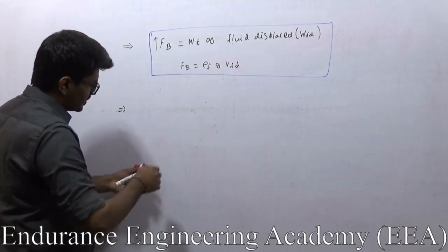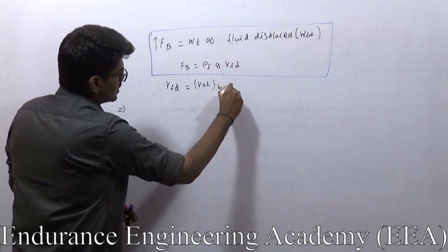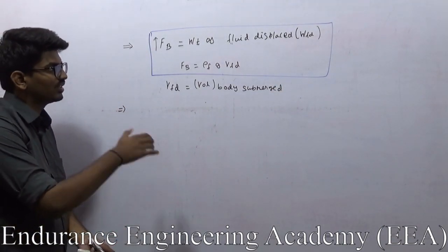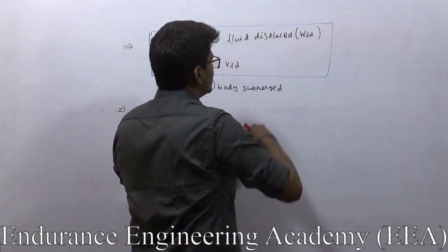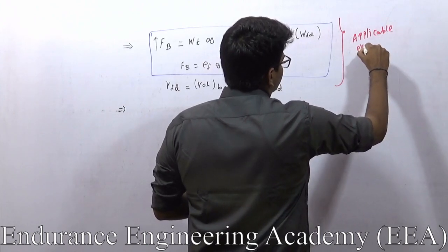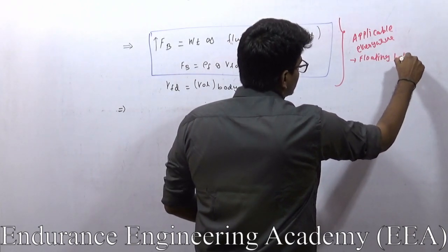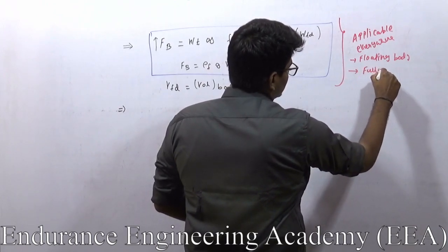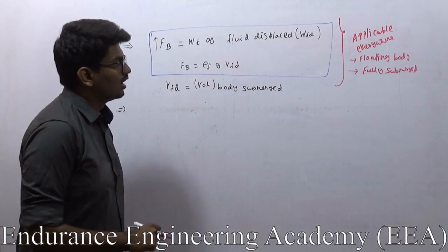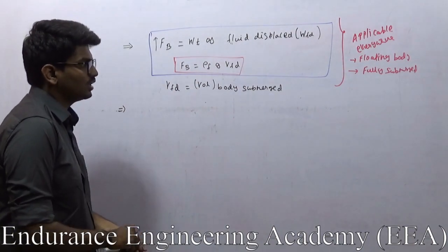The same Archimedes' principle also says that the volume of the fluid displaced is equal to the volume of the body submerged. If the total body is submerged, then the volume of fluid displaced equals the total volume of the body; if it is partially submerged, then it will be partially. This first condition — Archimedes' principle — is applicable everywhere: for a floating body as well as for a fully submerged body. Buoyancy force equals rho_f·g·V_fd, that is, buoyancy force equals weight of the fluid displaced.